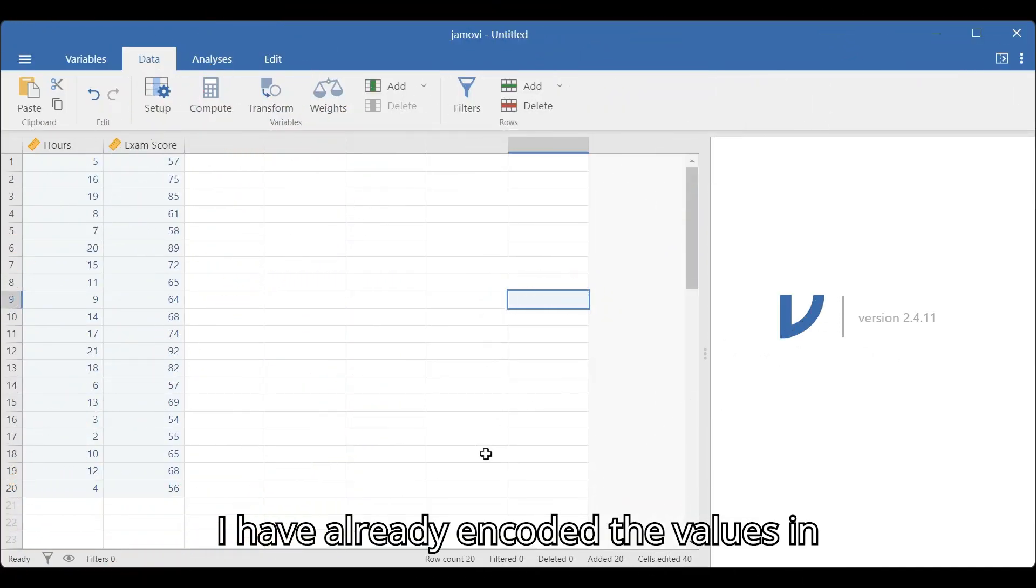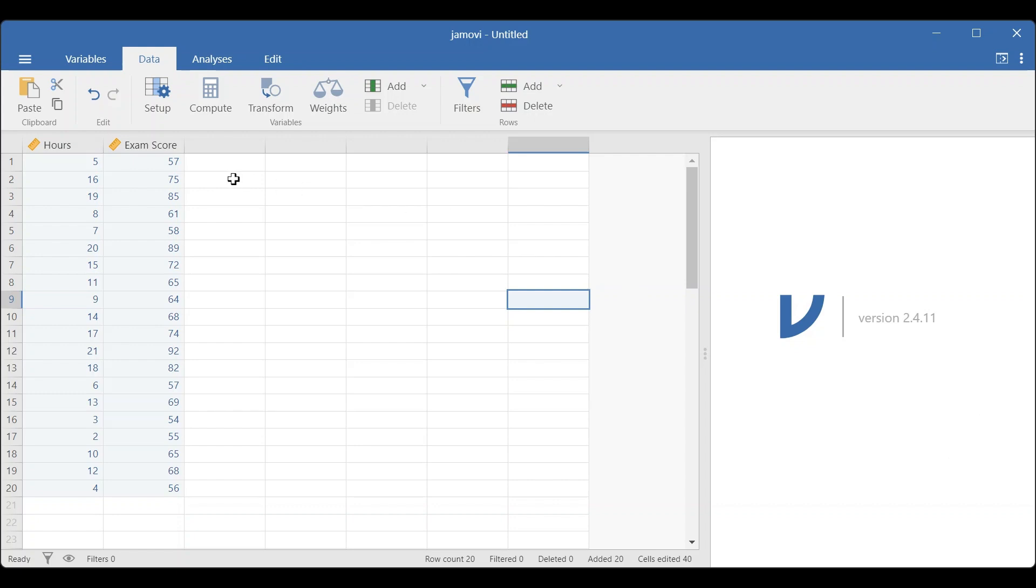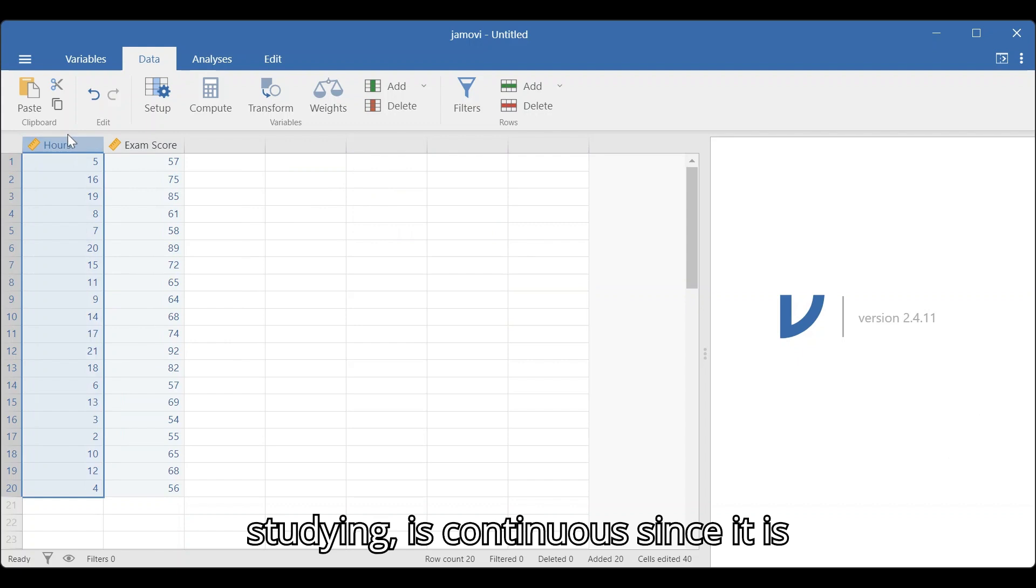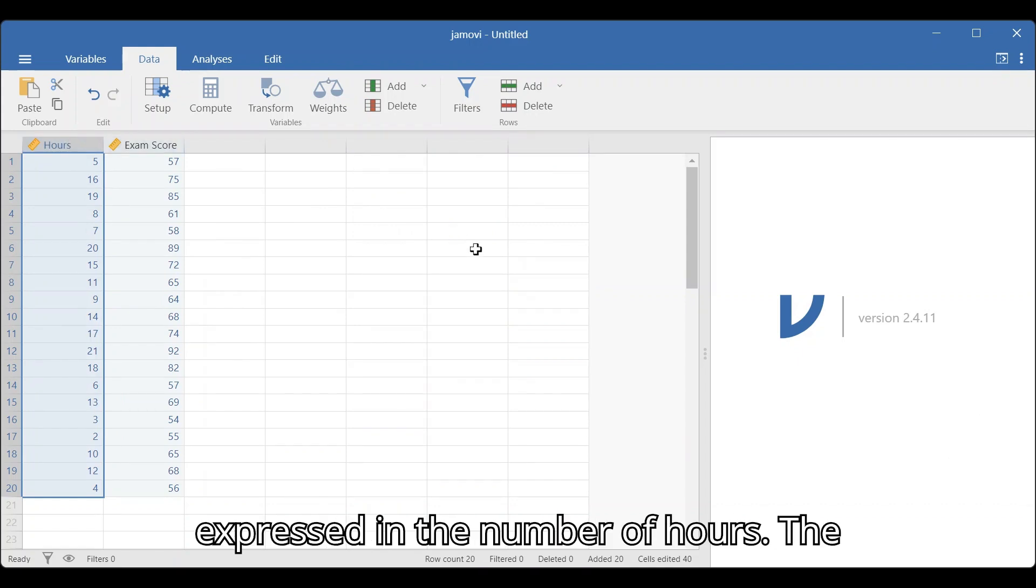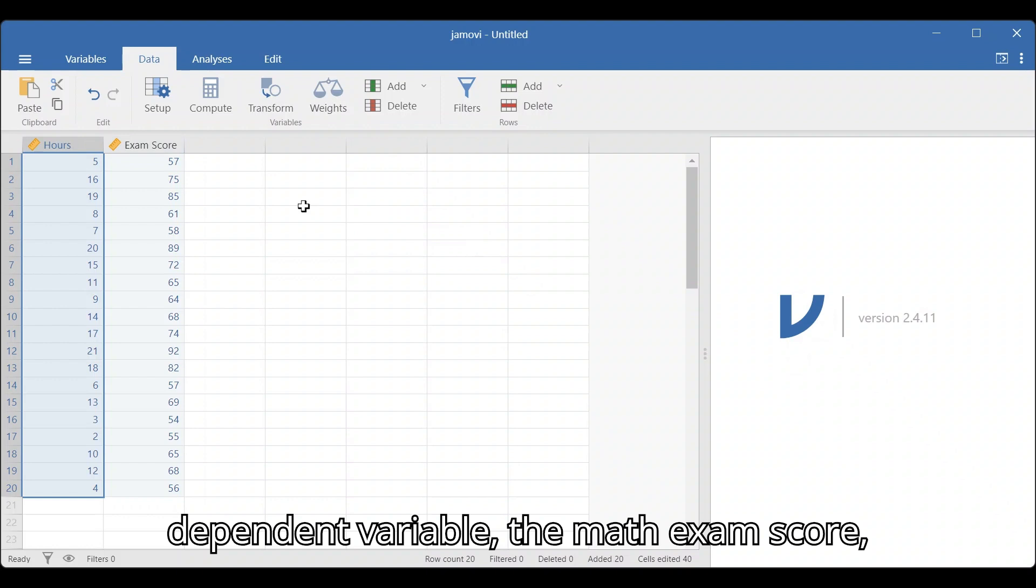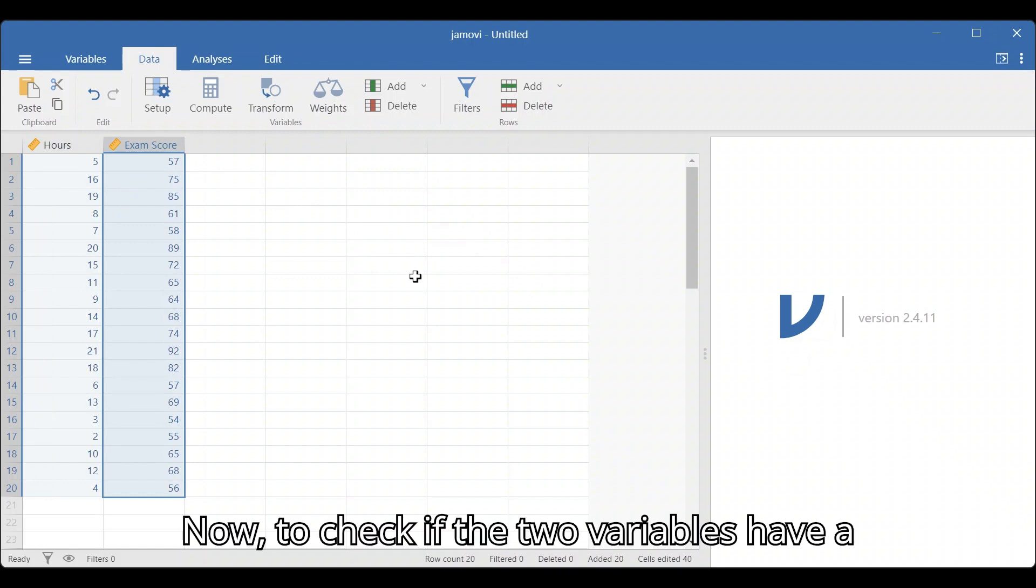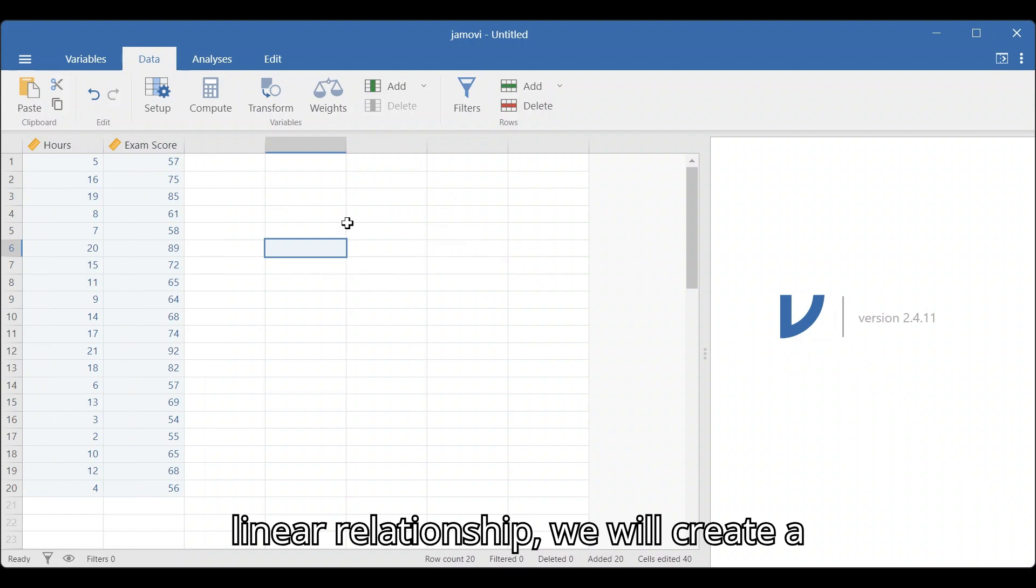I have already encoded the values in Jamovi using two columns. The independent variable, the hours spent studying, is continuous since it is expressed in the number of hours. The dependent variable, the math exam score, is also continuous. Now, to check if the two variables have a linear relationship, we will create a scatterplot.